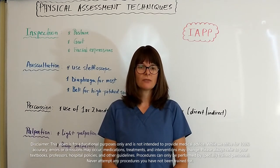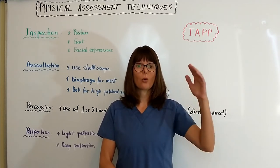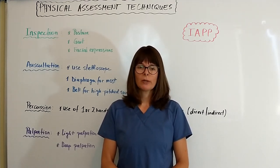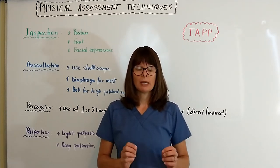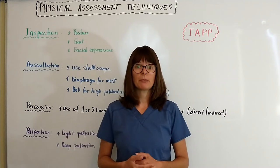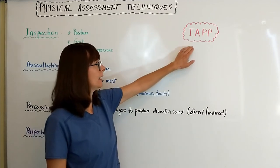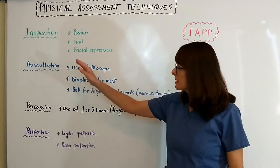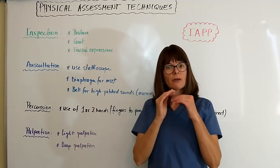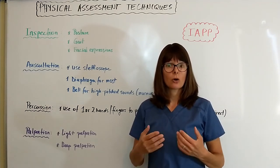Welcome to Nursing School Explained and this video on physical assessment techniques. Like everything in nursing, we usually follow a certain order of the way we do things, and that has a purpose so we don't forget anything. When it comes to physical assessment, we always follow the acronym IAPP, which stands for Inspection, Auscultation, Percussion, and Palpation. If you always follow the IAPP acronym, you won't forget anything and you'll be able to assess your patient correctly.